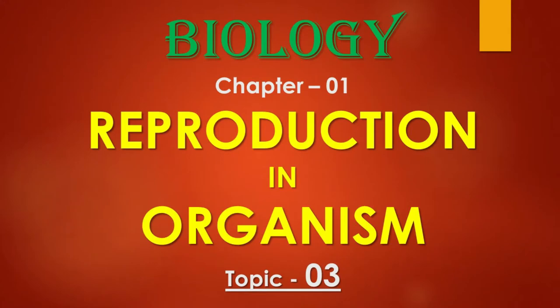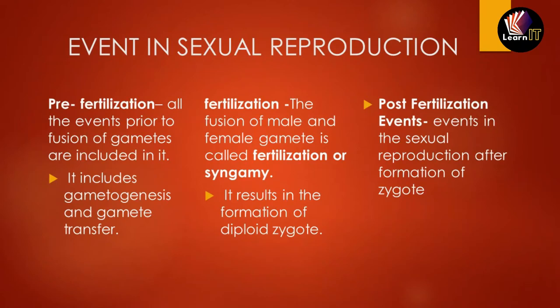Welcome to Learn It. We have already completed the basic two topics of this chapter — asexual reproduction and sexual reproduction. We'll move on to the third topic: reproduction in organisms. Topic 3 we will be starting is the events in sexual reproduction. There are three steps involved: the first is pre-fertilization, the middle one is fertilization, and the last is post-fertilization.